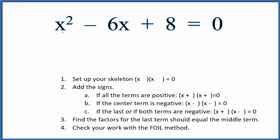In this video, we'll factor the equation x squared minus 6x plus 8 equals 0, and we'll use these steps here to guide our work. The first thing we want to do is set up a skeleton equation, and that'll look like this here. So this is our skeleton equation.